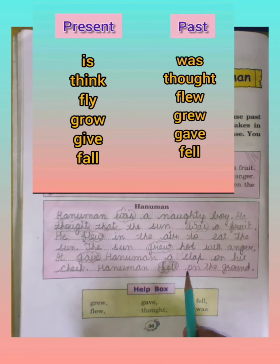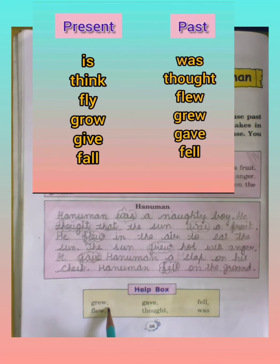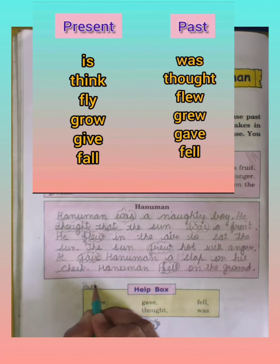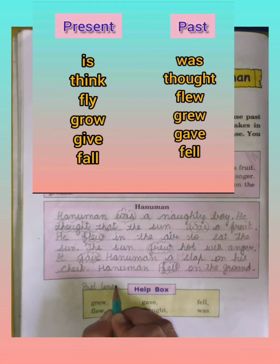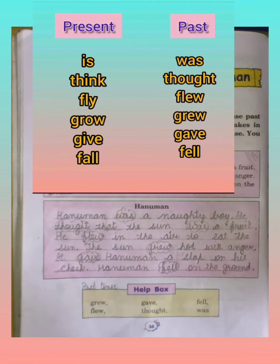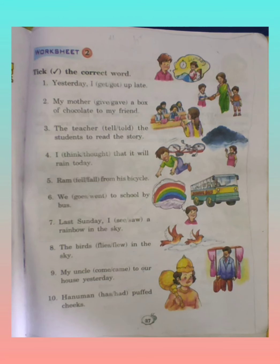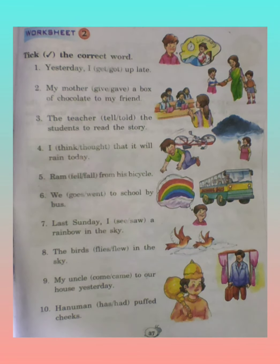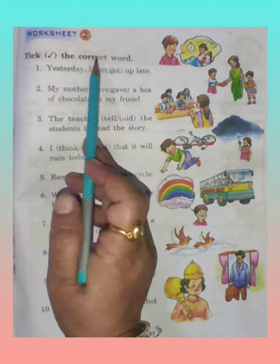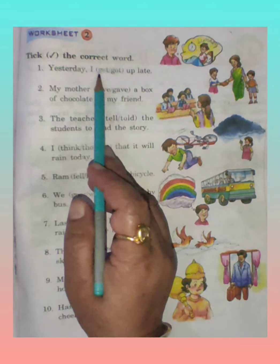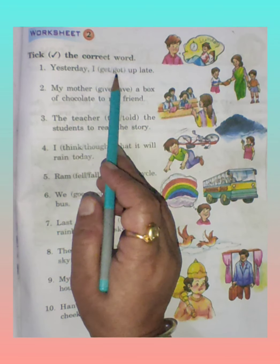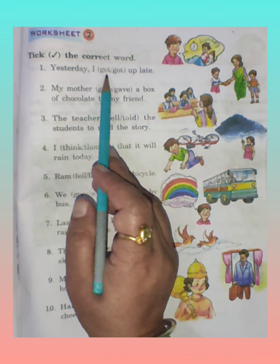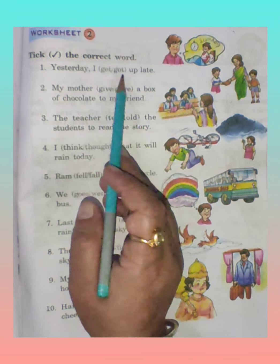You have to write down neatly. All the words written here are past tense words. Now come to the next page — worksheet 2. Tick the correct words. Two words are given and both are doing words. We have to tick the past tense word.